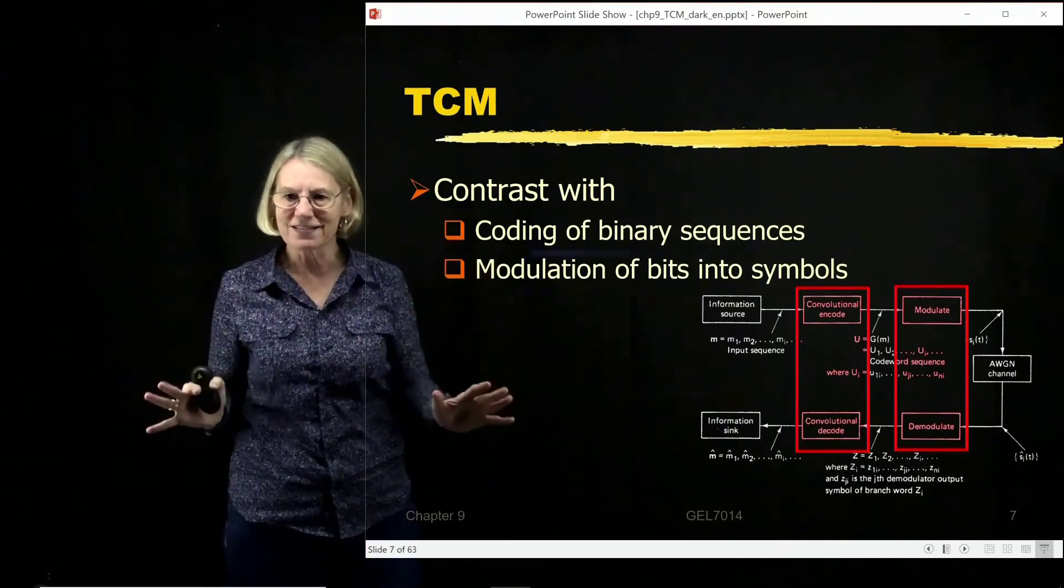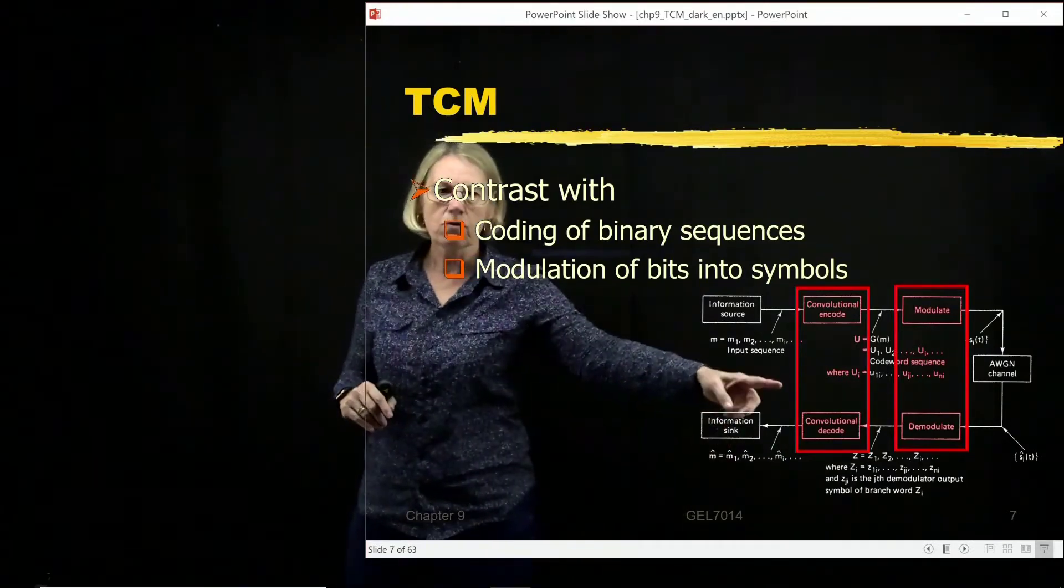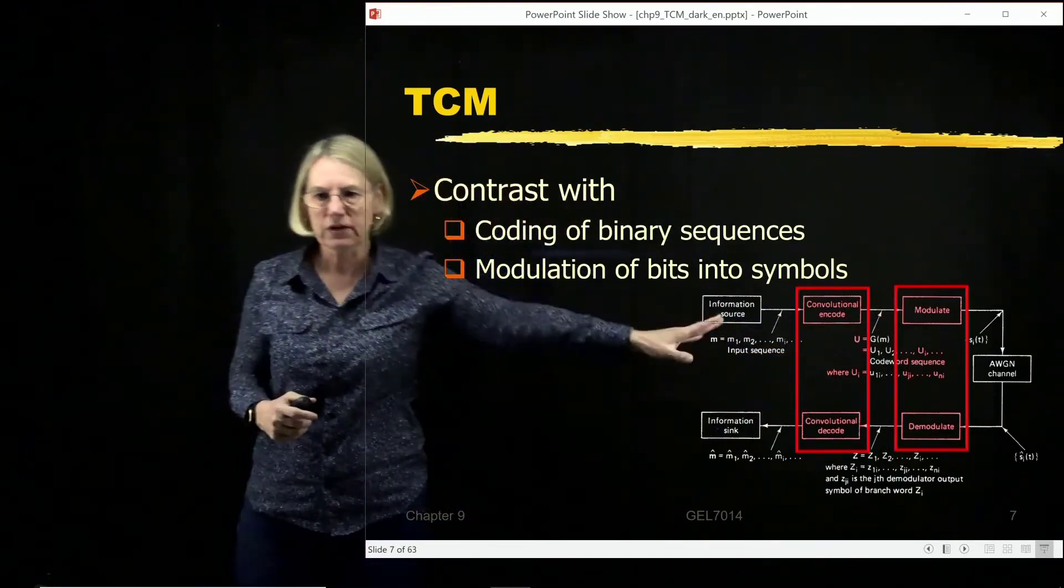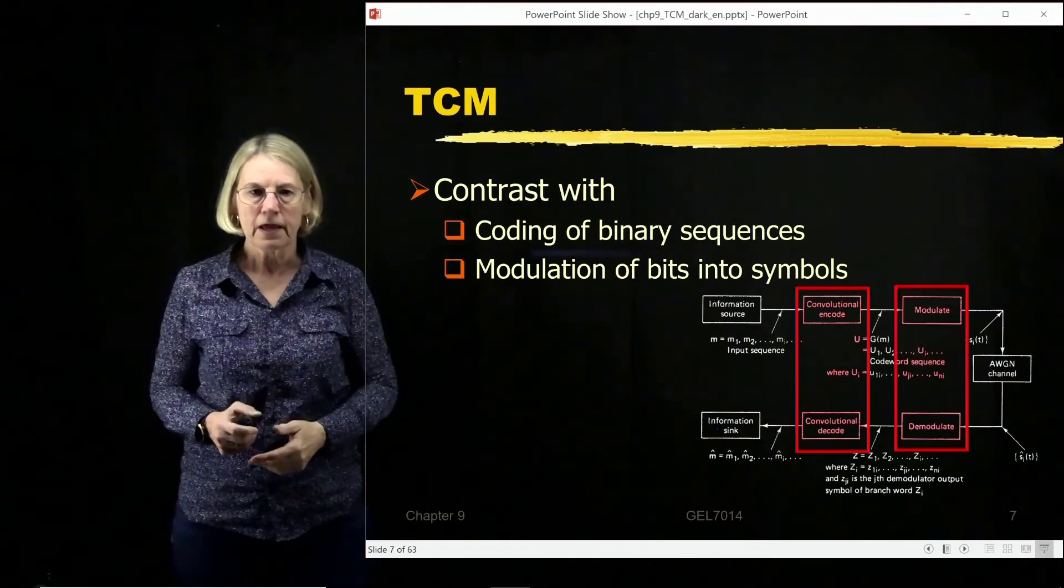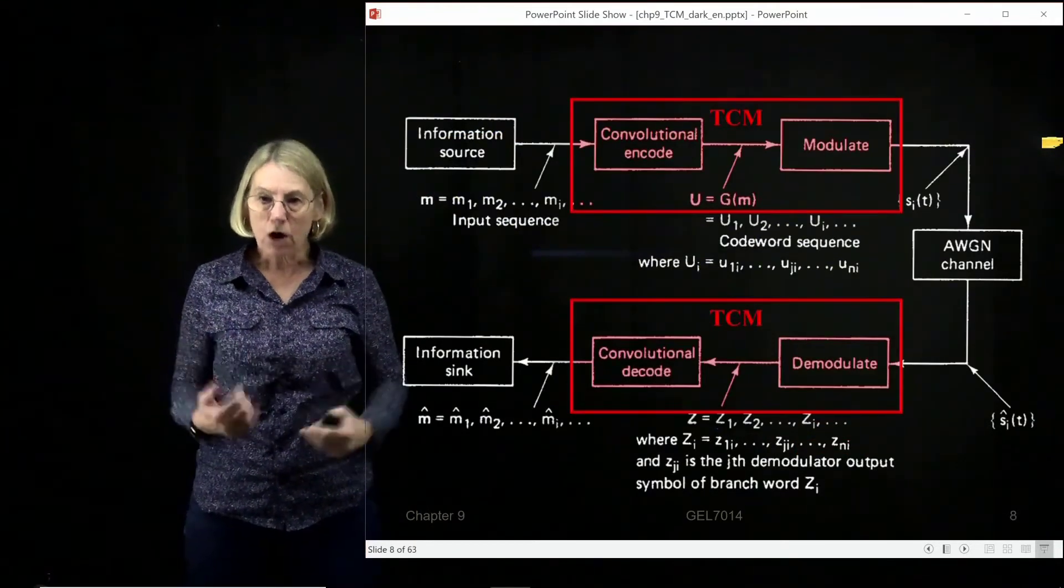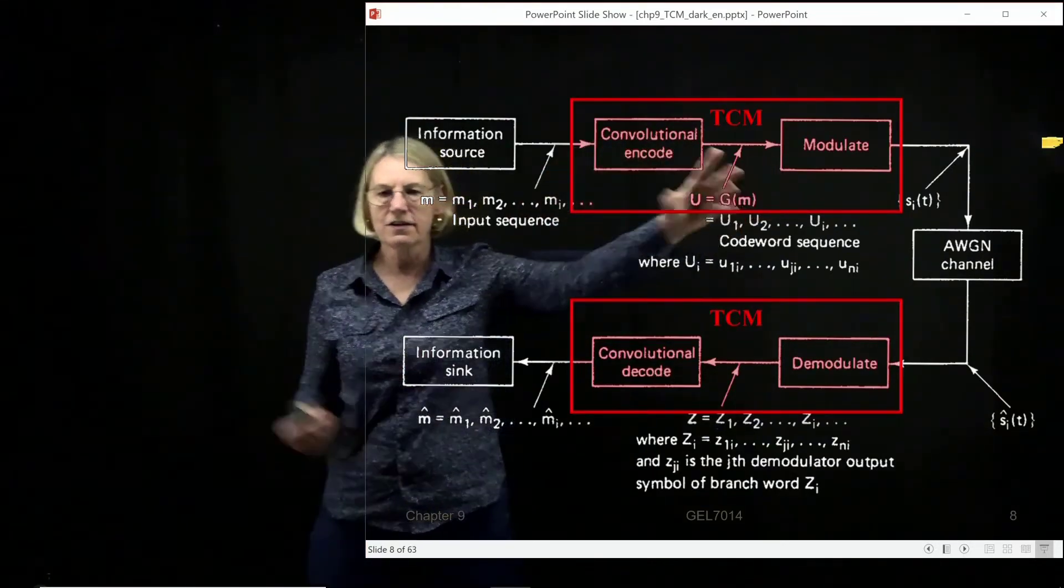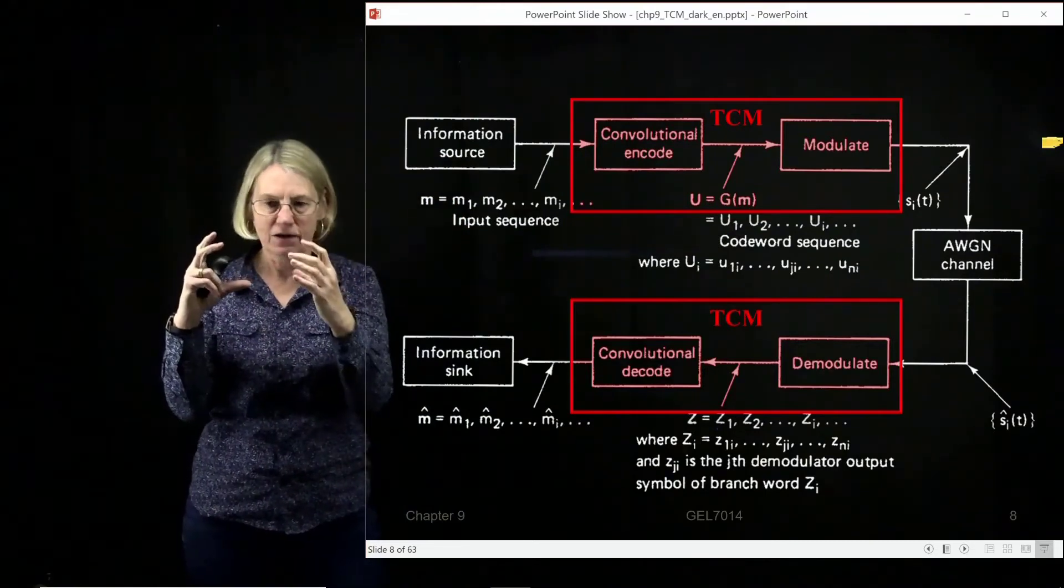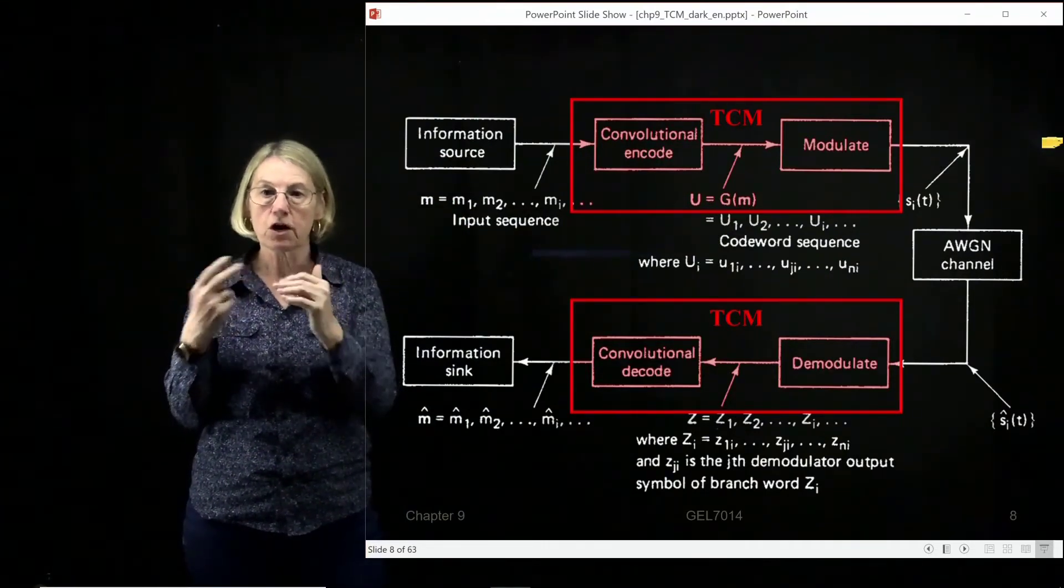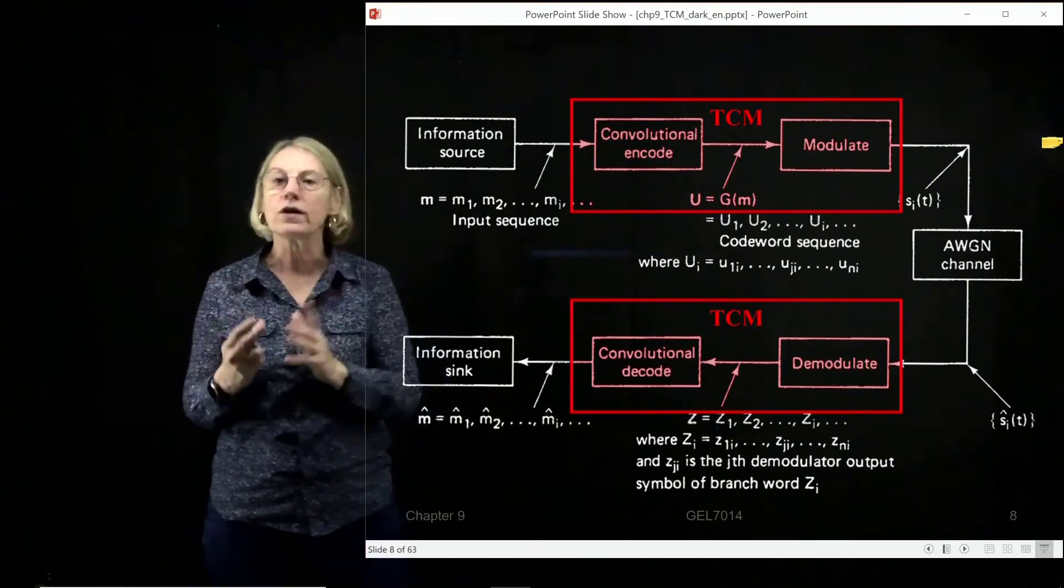Two separate, independent steps, completely independent choices. What code rate I use, what modulation I use, whether it's phase, whether it's frequency, whatever. Now, when we go to trellis-coded modulation, essentially what we're doing is these two blocks are now merged into one block. One trellis-coded modulation block, where I do both the coding operation and the modulation operation in one step.